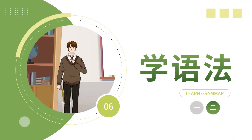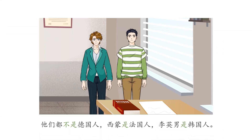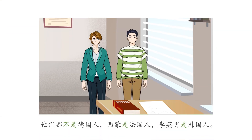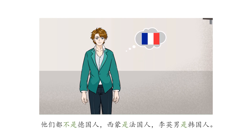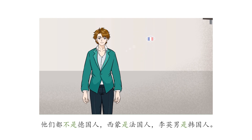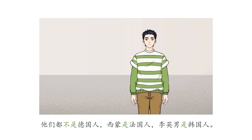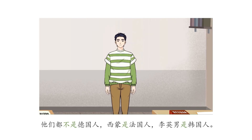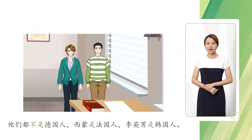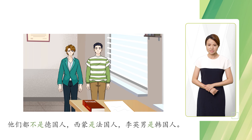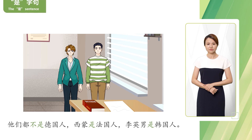Now let's learn grammar. 他们都不是德国人。西蒙是法国人。李英南是韩国人。他们都不是德国人。西蒙是法国人。李英南是韩国人。